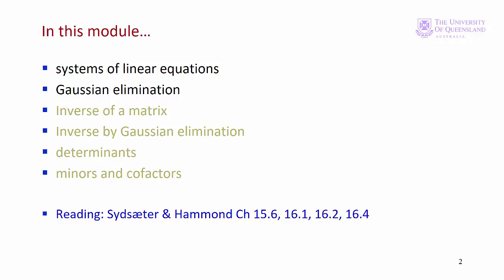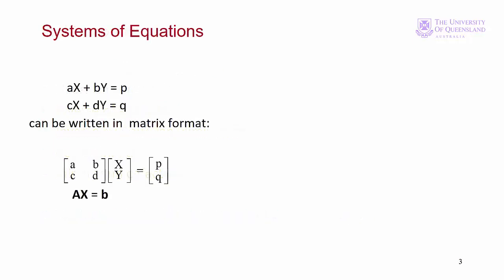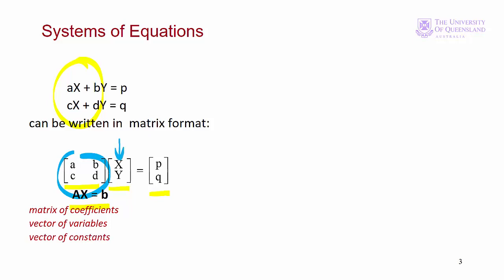Determinants tell us whether a matrix has an inverse or not. So we have a system of two equations with two variables x and y. The coefficients are a, b, c and d, and p and q are the right hand side constants. Recalling matrix multiplication from the last lecture, the left hand side can be written as a product of two matrices, a two by two and a two by one. The right hand side becomes a two by one matrix or a column vector. In matrix notation we have a square matrix of coefficients, a vector of variables and a vector of constants. The matrix of coefficients will always be a square matrix as we need to have the same number of equations as there are variables.